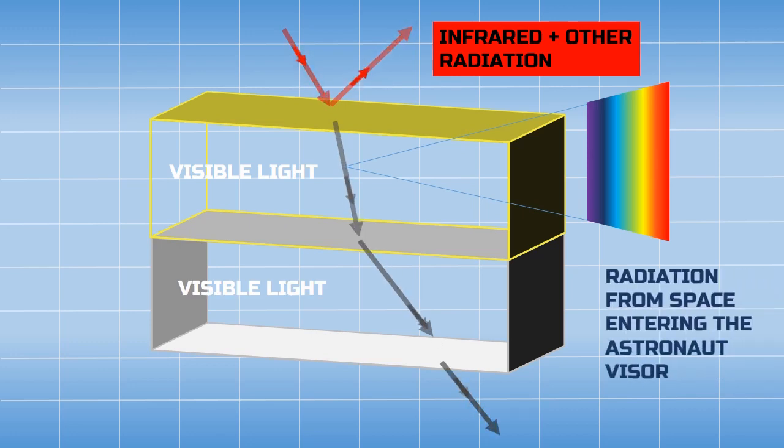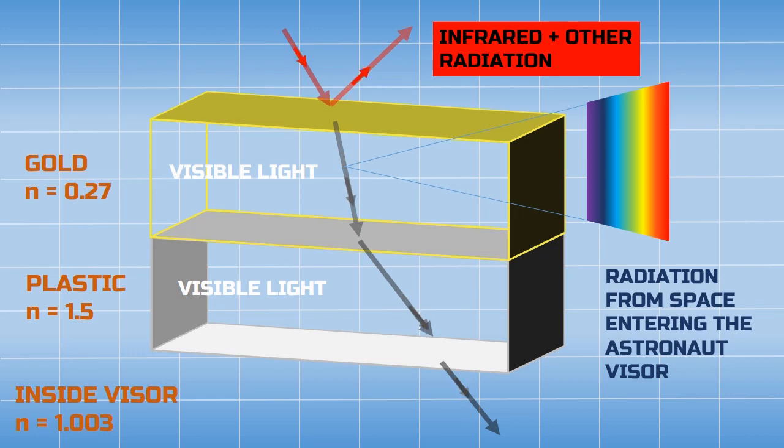It further reaches the astronaut's eyes and he can see the objects outside in space. Now, why does the visor look like a mirror and we can't see the astronaut's face?